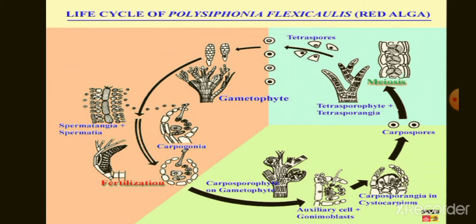The male sex organ is known as spermatangia, developing non-motile spermatia which are male gametes. The female sex organ is known as procarp, and it has a carpogonium bearing a receptive structure called trichogyne. The egg develops in the basal swollen part of the carpogonium. The fertilized carpogonium produces many filaments called gonimoblast filaments. The tip cell of each gonimoblast filament functions as a carposporangium, producing a single carpospore.